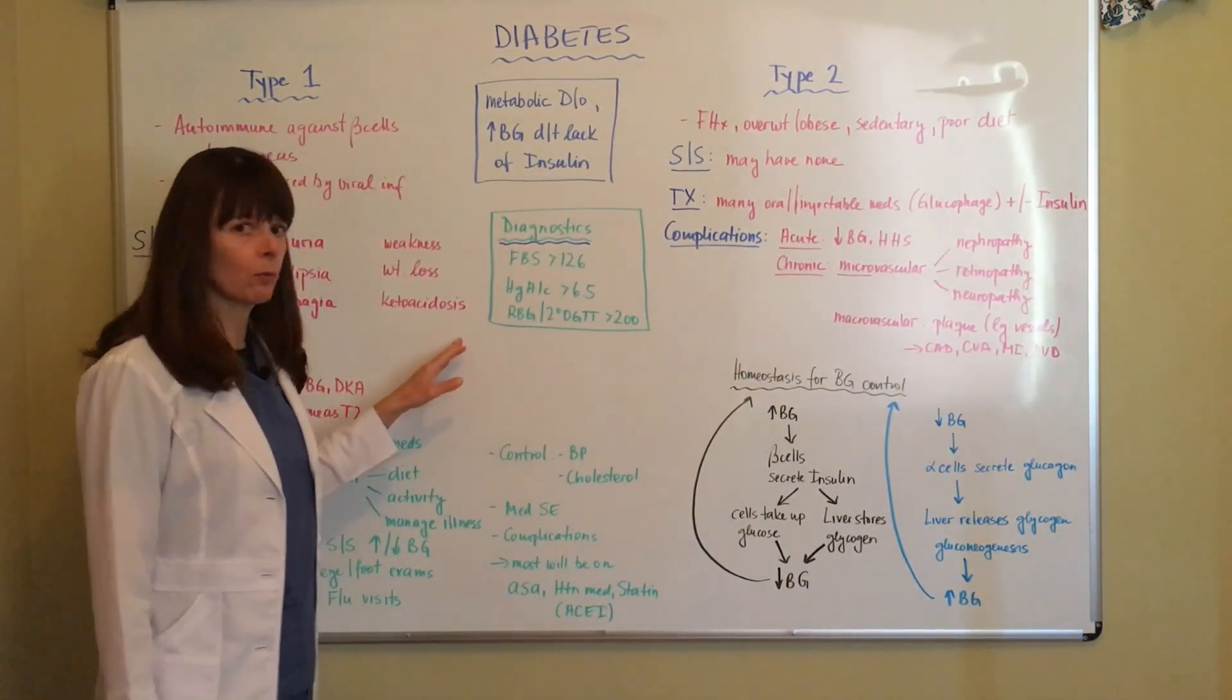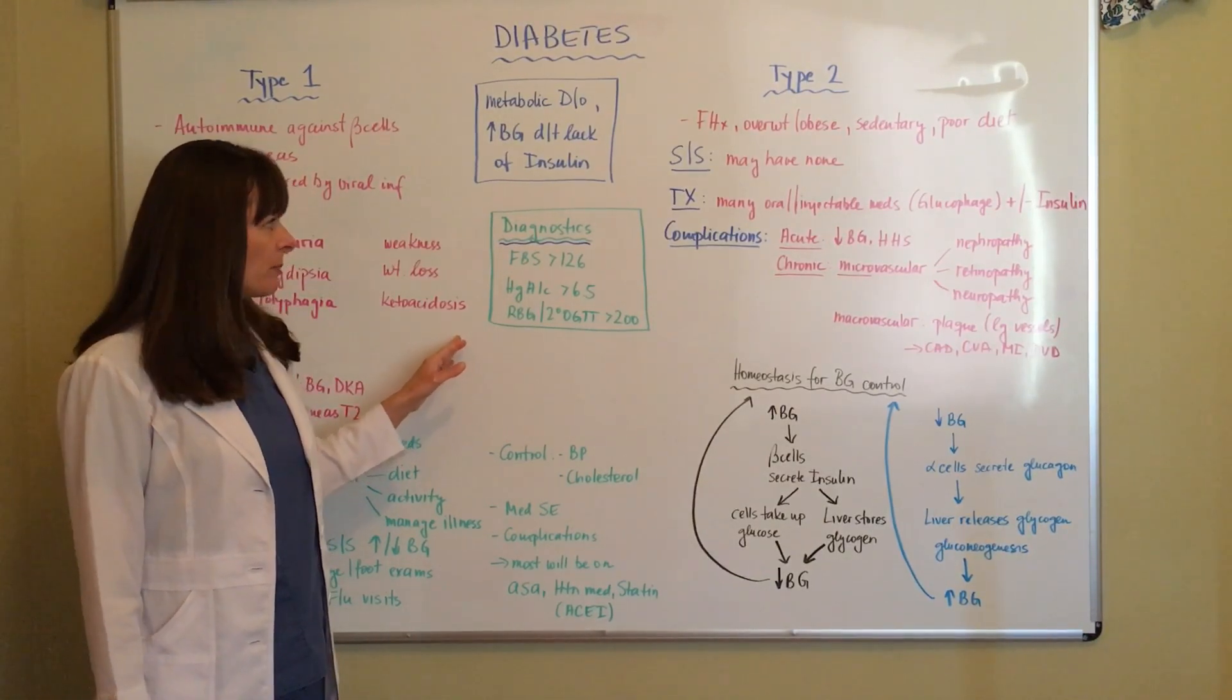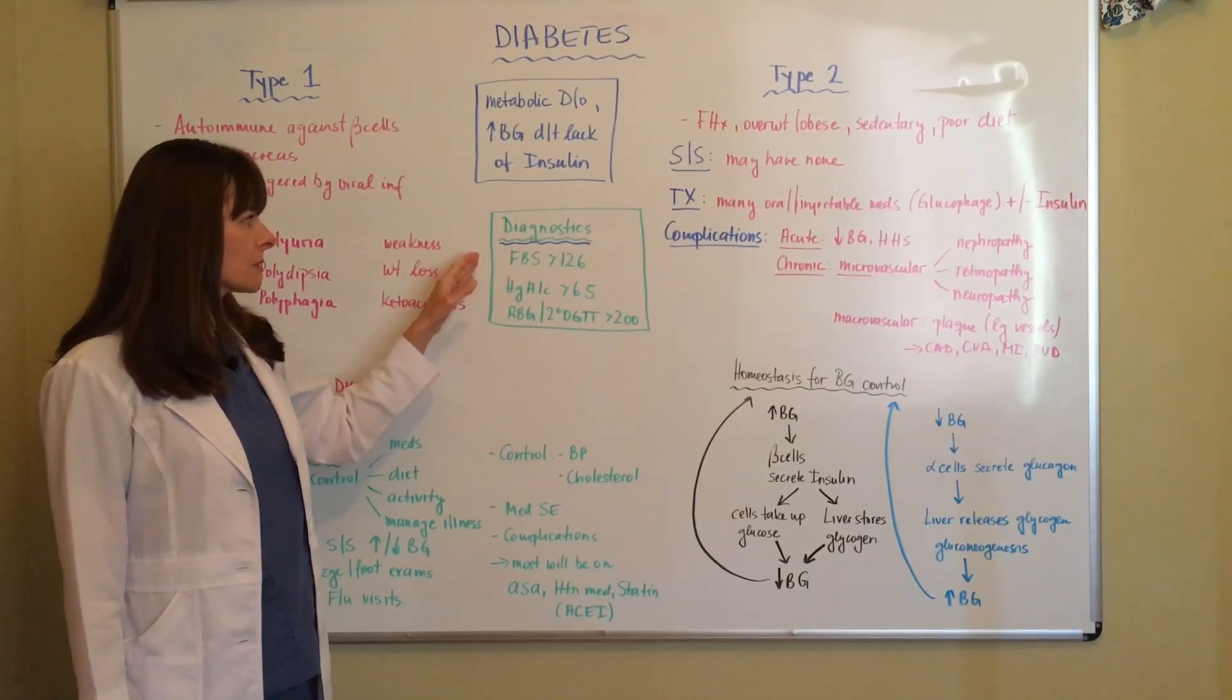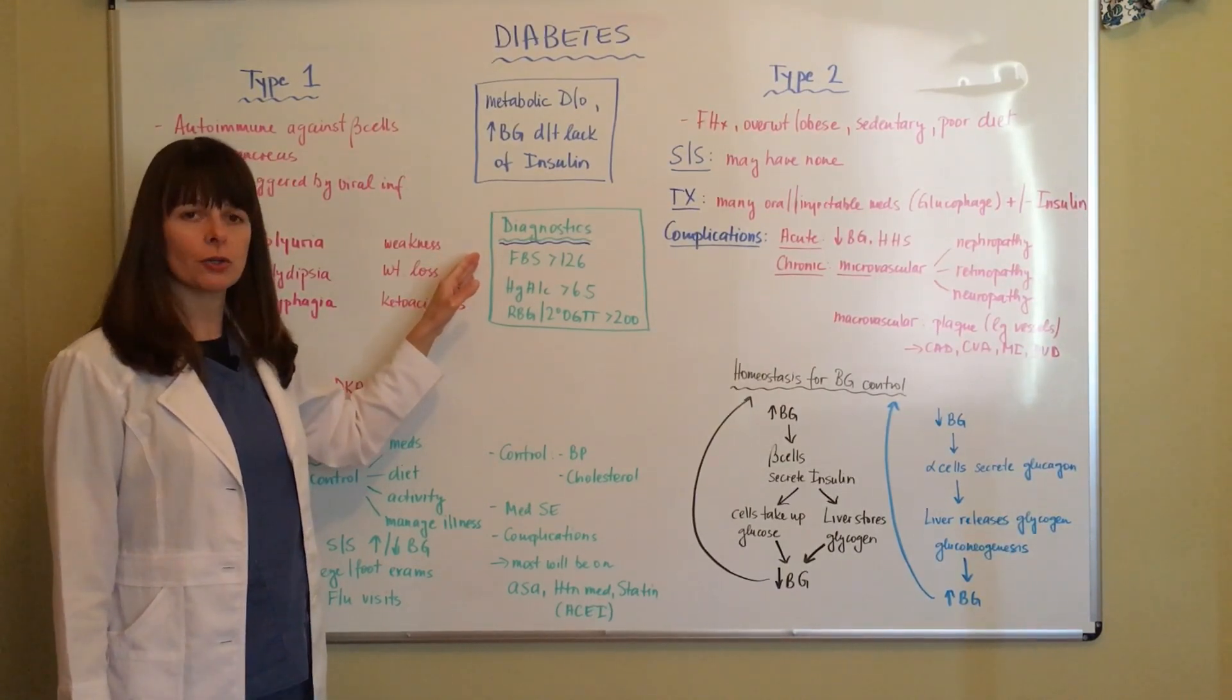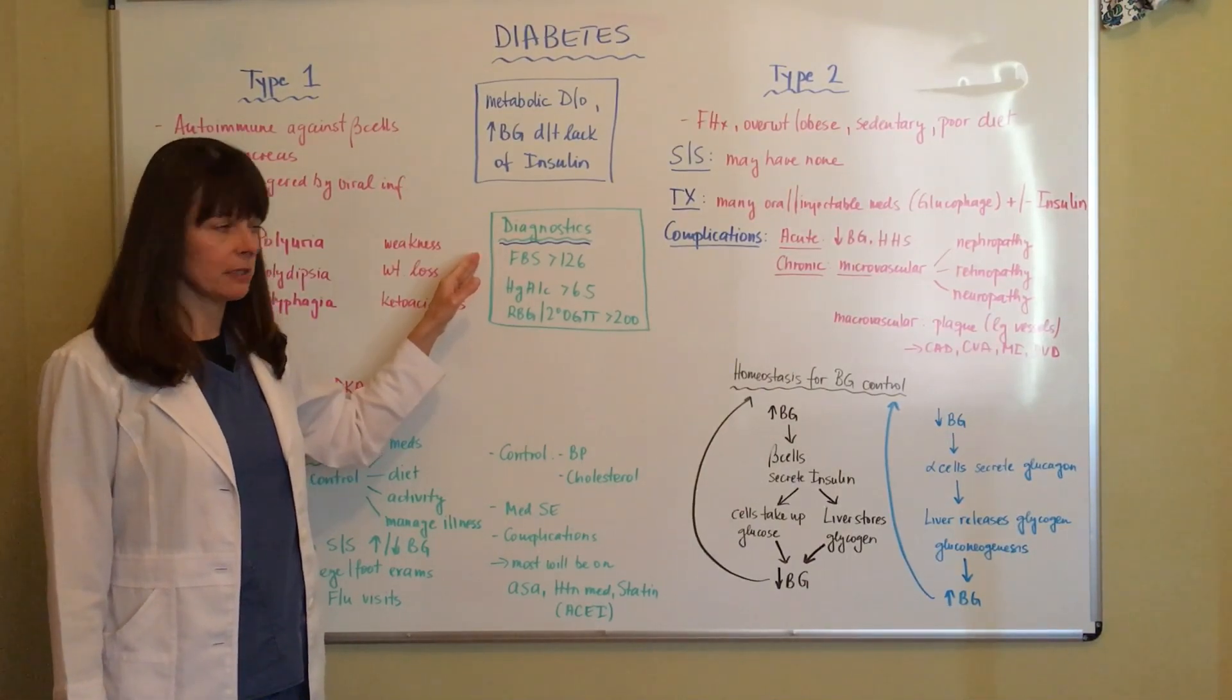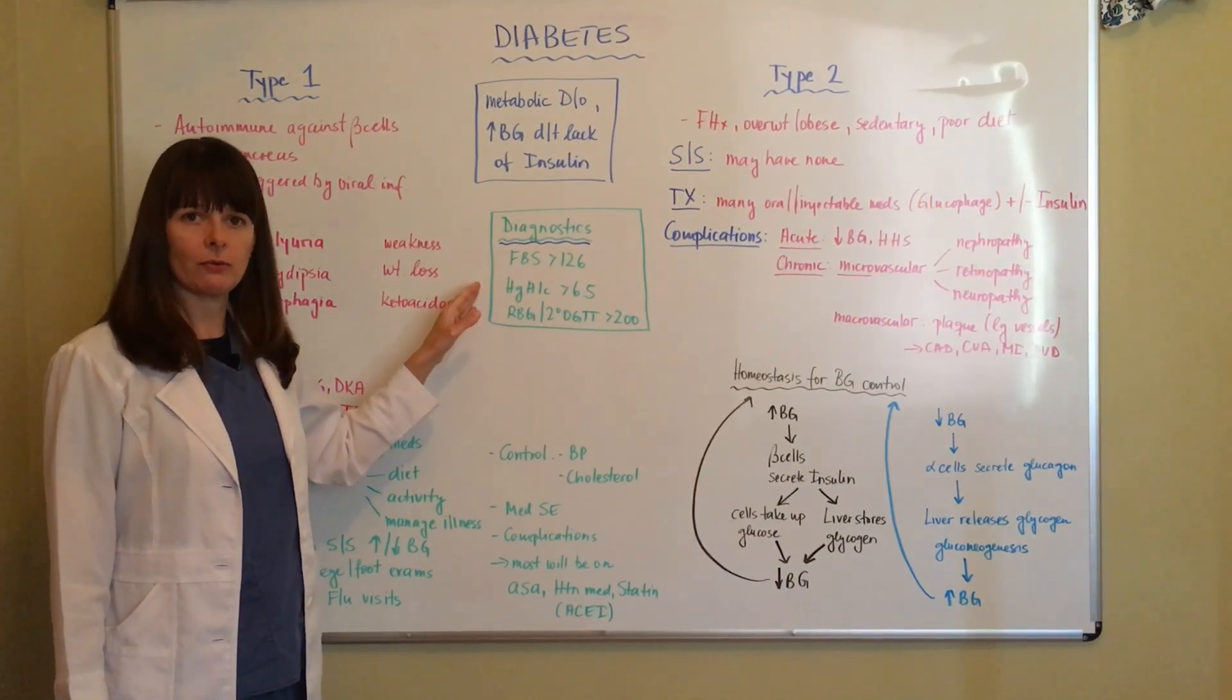Diagnostic tests for type 1 and 2 diabetes are the same. There are basically three or four different options. First of all is a fasting blood sugar of greater than 126 is a diagnosis of diabetes.